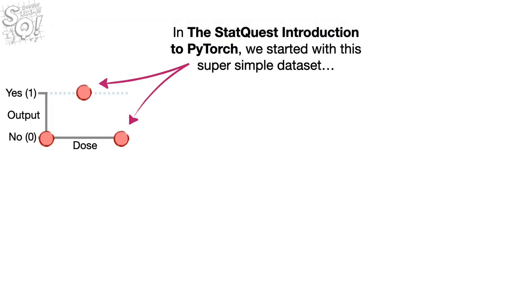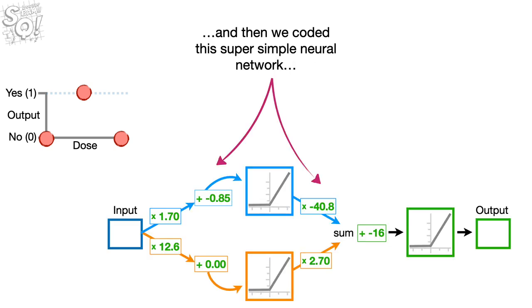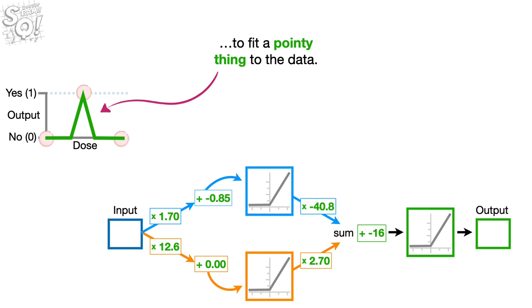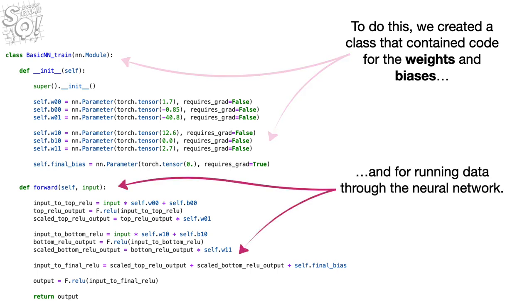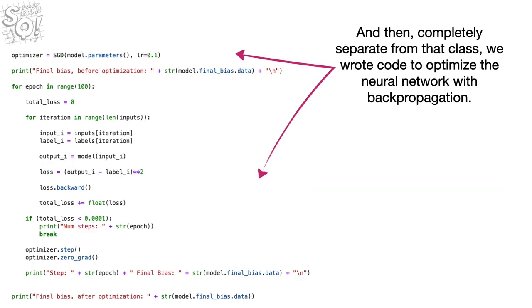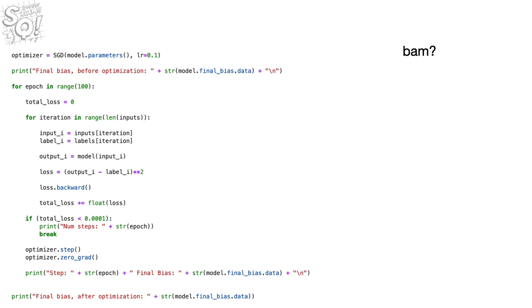In the StatQuest Introduction to PyTorch, we started with a super simple data set, and then we coded a super simple neural network to fit a pointy thing to the data. To do this, we created a class that contained code for the weights and biases, and for running data through the neural network. And then, completely separate from that class, we wrote code to optimize the neural network with backpropagation.